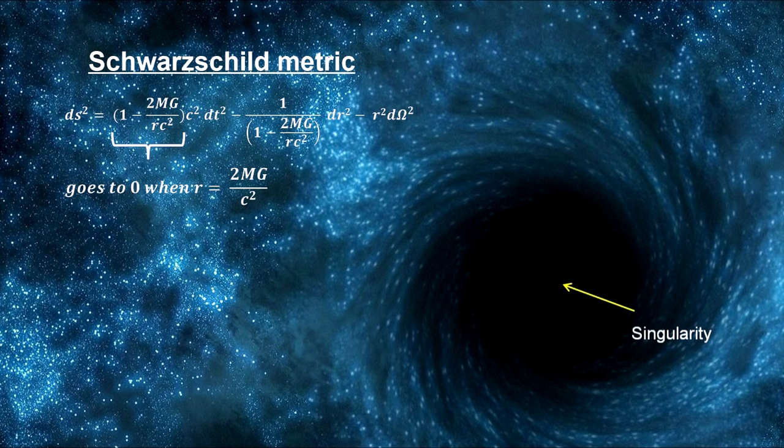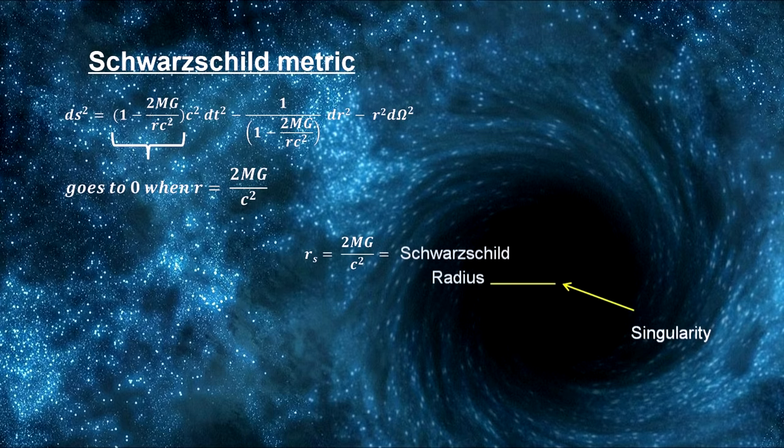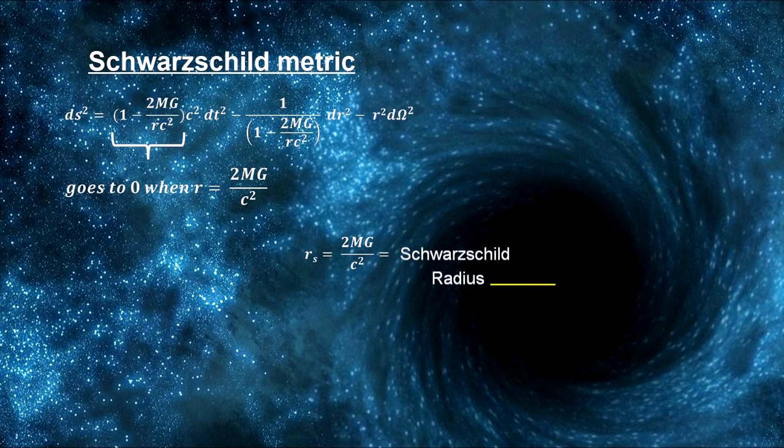The Schwarzschild metric showed that if the mass of a body should contract to a small enough radius, it could capture light itself. This radius is known as the Schwarzschild radius and forms a sphere known as the Event Horizon.